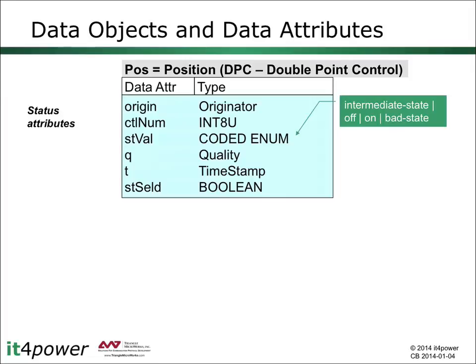We have a first group of data attributes representing the status information. Among them, we have STVAL, where we find the value of the position of the switch, which typically will be either open or closed, but can also be in an intermediate or bad state. Then we have Q for the quality, indicating among other things if the information is valid, and finally T for the timestamp of the last change of the position value. These three attributes are the typical operational information of the switch position.